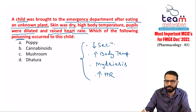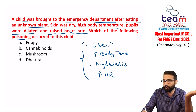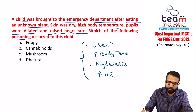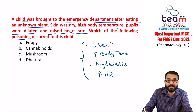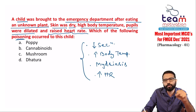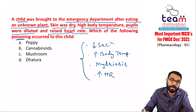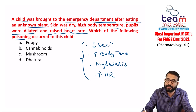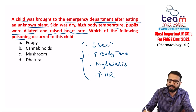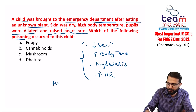All these symptoms — decreased secretions, decreased sweating leading to increased body temperature, dilated pupils (mydriasis), and tachycardia — are due to anticholinergics. Cholinergic drugs increase secretions and cause miosis; anticholinergics do the opposite. This is not sympathomimetic because secretory glands have muscarinic receptors — only muscarinic blockade decreases secretions.